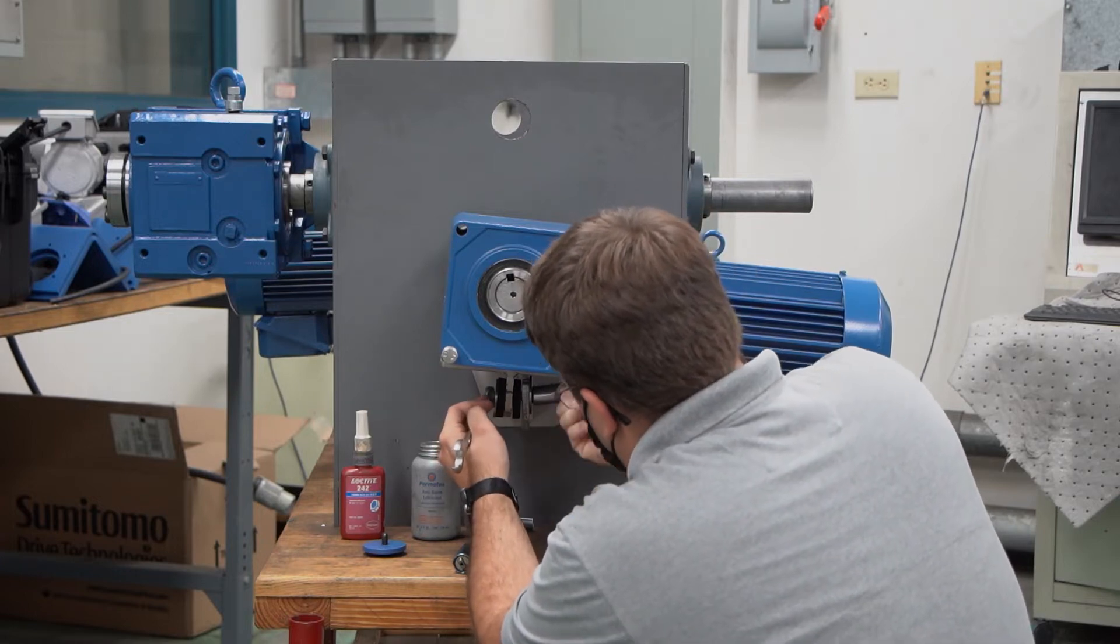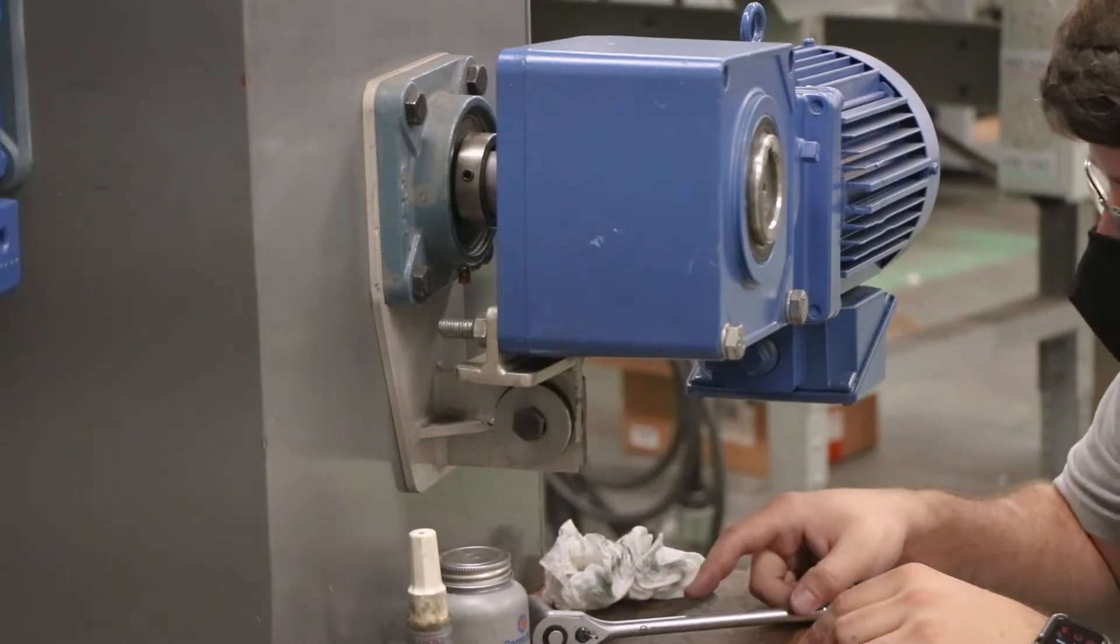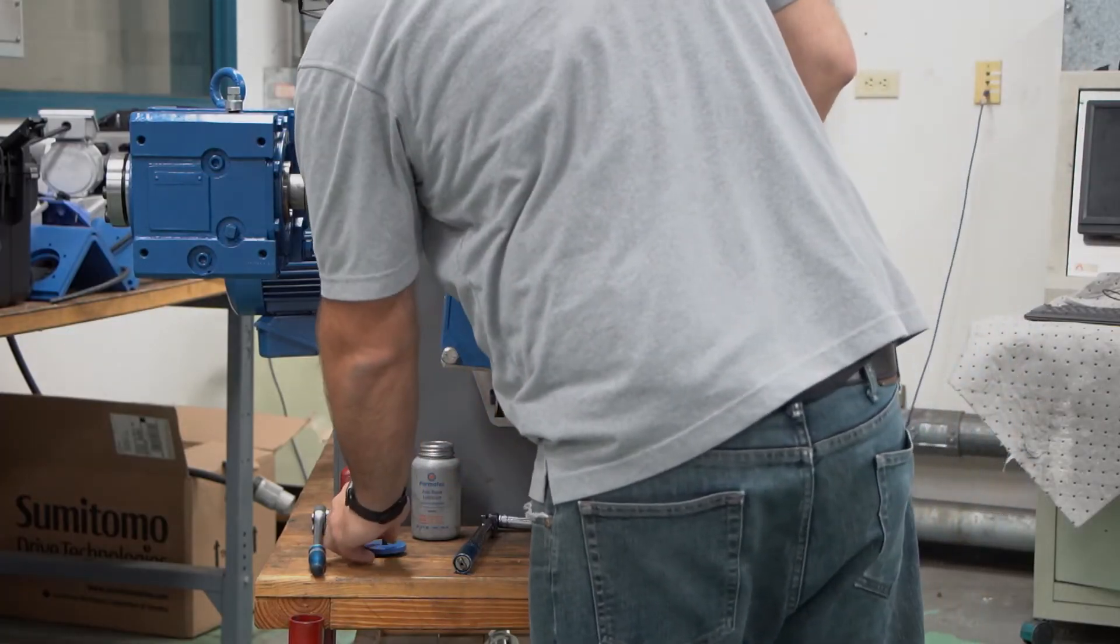Once the torque arm is tightened down, again you should only tighten it down just enough and you should be able to go back and return one of those bushings by hand. So the torque arm is good to go.